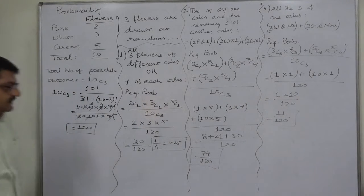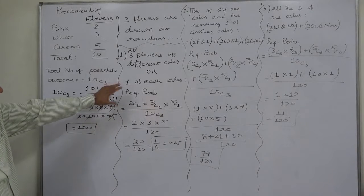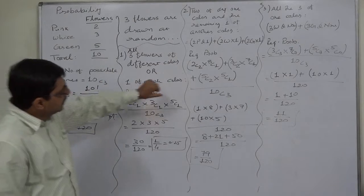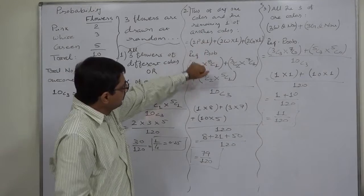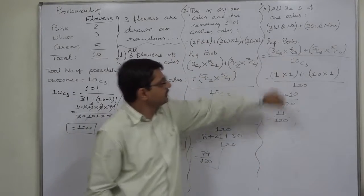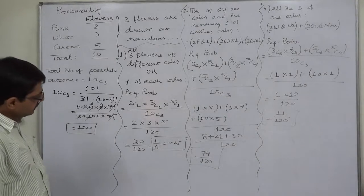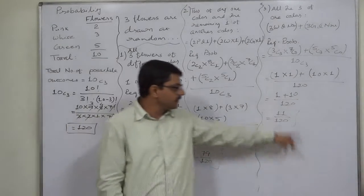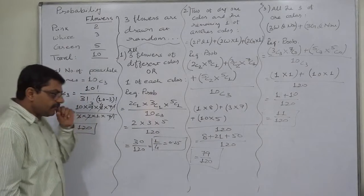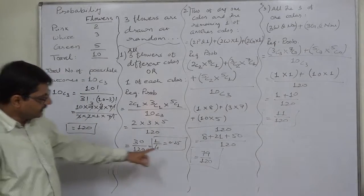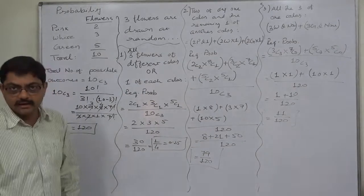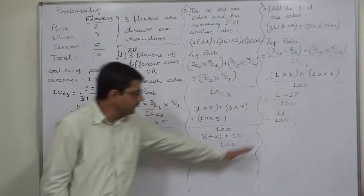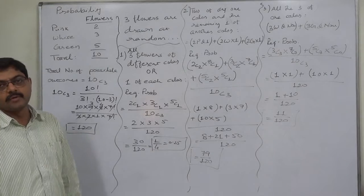The three events are: one of each color, two of any one color and one of another, and all three of one color. Their probabilities are 30/120, 79/120, and 11/120 respectively. Adding them together: 30 + 79 + 11 = 120. So the sum of all three probabilities equals 120/120 = 1.